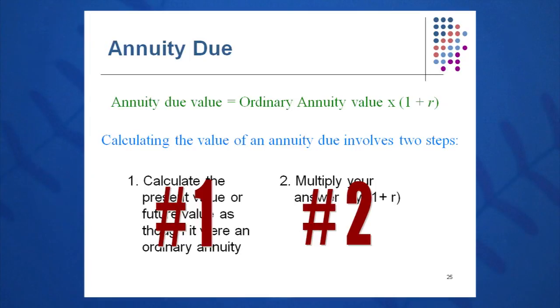That shows that real estate folks are very intelligent investors — they collect money early and get the benefit of the (1 + R) multiplying factor.